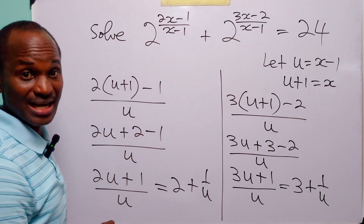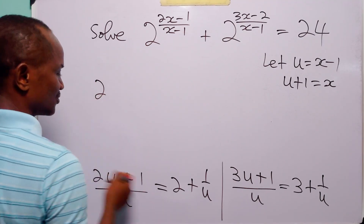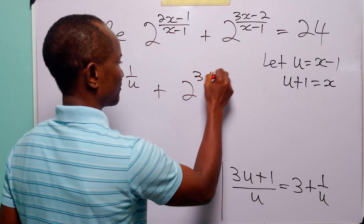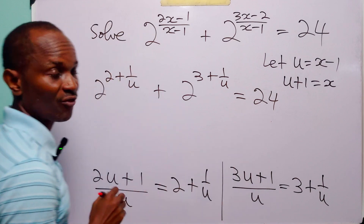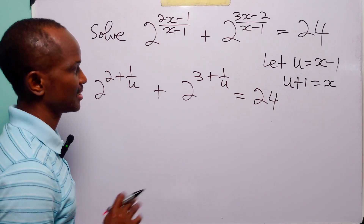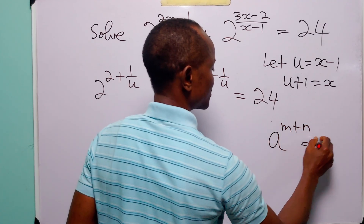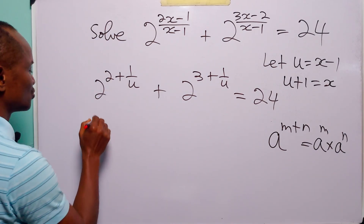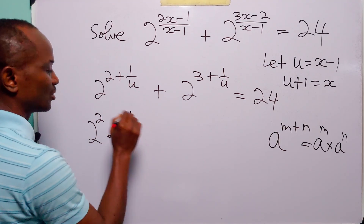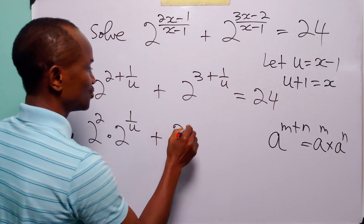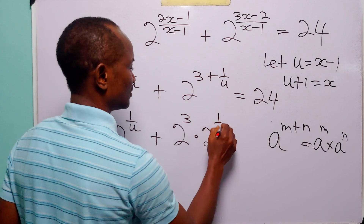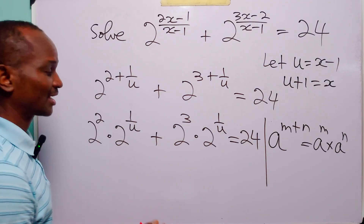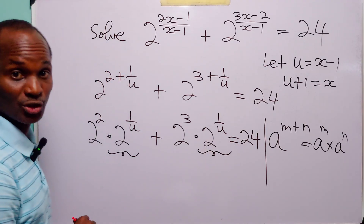So we can rewrite the original equation as 2 to the power of 2 plus 1 over u, plus 2 to the power of 3 plus 1 over u, is equal to 24. Now let us remember our laws of indices. We have that a to the power m plus n is equal to a to the power m multiplied by a to the power n. So the first term can be written as 2 squared multiplied by 2 to the power 1 over u, and the second term as 2 cubed multiplied by 2 to the power 1 over u. Looking at these two terms, we can see a common factor, which is 2 to the power 1 over u, so we can factorize that.